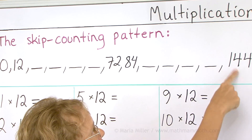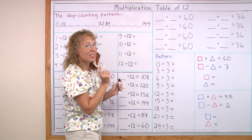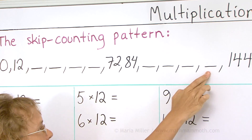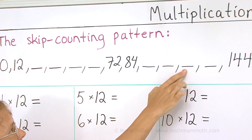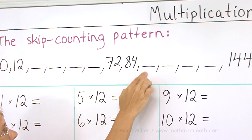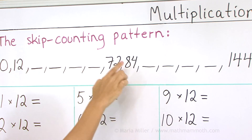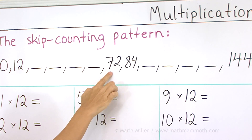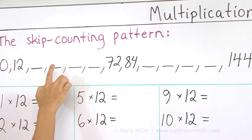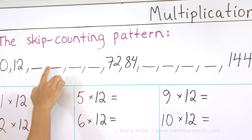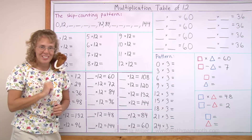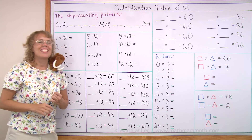We're going back to this list. 84, 72, 12, and 0. All right, let's go on.